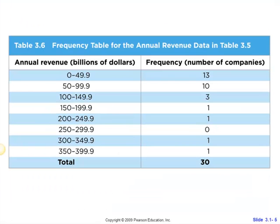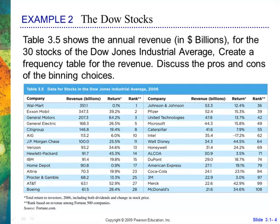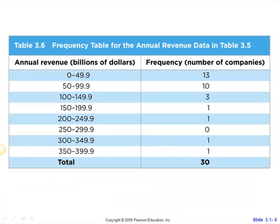And so what we have here is they broke it up into 50s, from 0 to 49.9. And the reason they used the decimal point one place, because they had one decimal place in the data. So they counted up each one and they found they had a total of 30. So that's their frequency table.